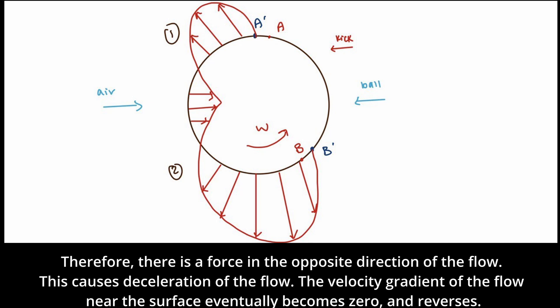Therefore, there is a force in the opposite direction of the flow. This causes deceleration of the flow. The velocity gradient of the flow near the surface eventually becomes zero and reverses.